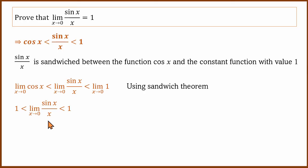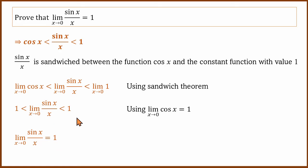So this is 1. If both bounds are equal to 1, it is equal. The limit of sin x by x when x tends to 0 is proved to be 1. Thanks for watching. In the next video, there is a proof and a problem. Bye!